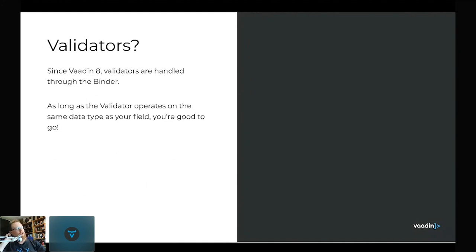Validators: since we have binder, validation features have moved from the component into the binder. All fields that work with the HasValue API automatically work with validators — there's nothing extra you need to do. You just need to make sure the validator uses the same data type, so it operates on AvatarImage values. Adding validators to the binder requires no extra code.